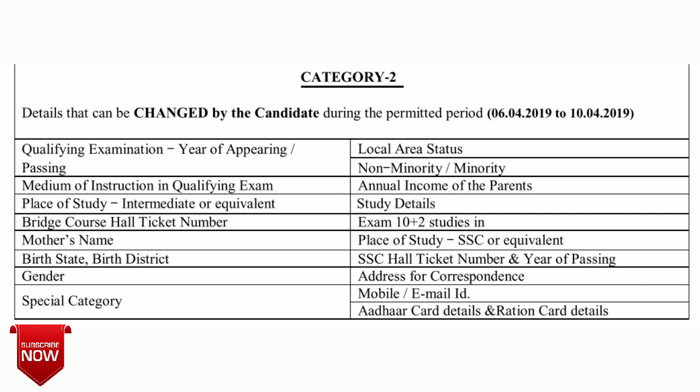Category 2 covers the details that can be changed by the candidate. Those details can be changed from 6th April to 10th April. You have that time period to change those details if you have committed any mistake in them.